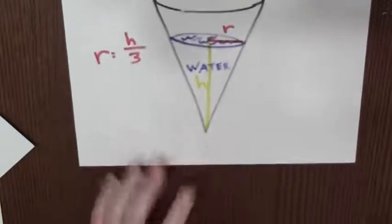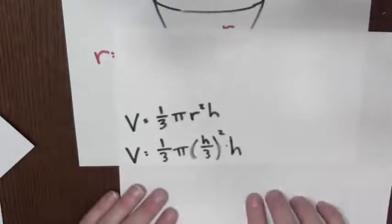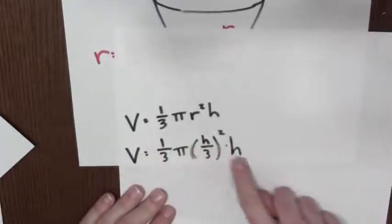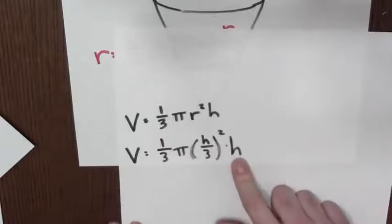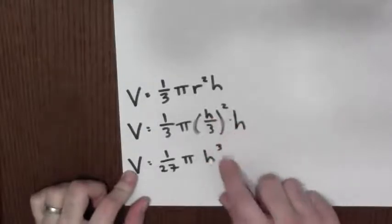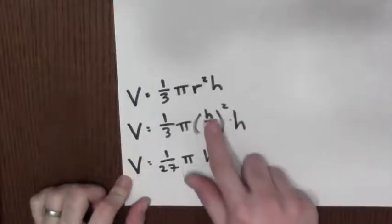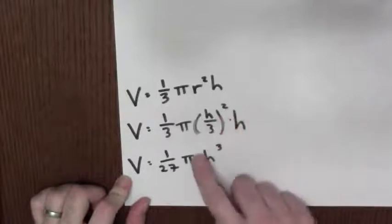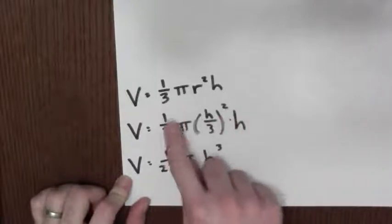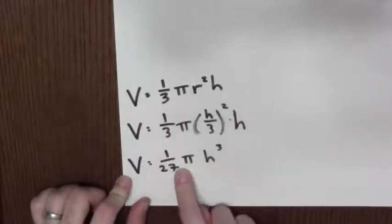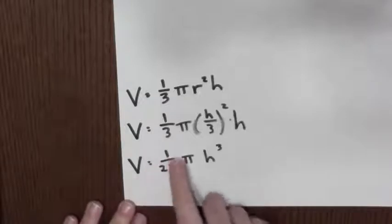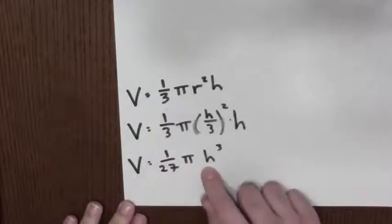That lets me write down the equation for the volume of water just in terms of a single variable h. I can simplify this expression. I can combine the h squared and the h to give me h cubed. The 1/3 squared becomes 1/9, which combines with the 1/3 to give me 1/27. So the volume is 1/27 pi times the height cubed.